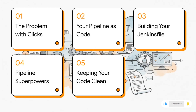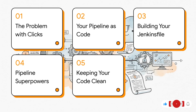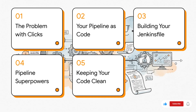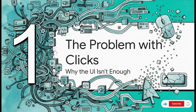Here's what we've got on tap: first, we'll talk about why the click-based setup is problematic. Then we'll meet the hero of our story — pipeline as code. After that, we're going to roll up our sleeves and build our first Jenkinsfile from the ground up. Then the fun part — we'll add some serious superpowers to it. And finally, we'll wrap up with how to keep your code from becoming a total mess.